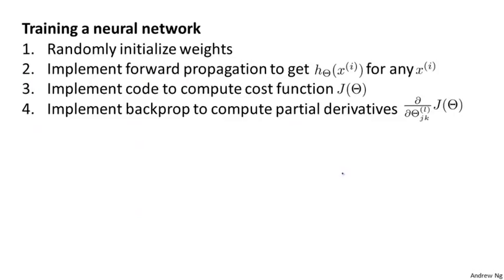Next, here's what we need to implement in order to train a neural network. There are actually six steps. The first step is to set up the neural network and to randomly initialize the values of the weights. We usually initialize the weights to small values near zero.